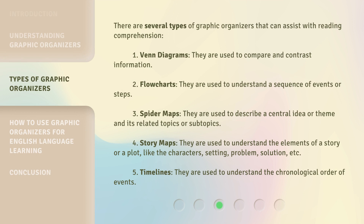There are several types of graphic organizers that can assist with reading comprehension. 1. Venn Diagrams — used to compare and contrast information. 2. Flow Charts — used to understand a sequence of events or steps. 3. Spider Maps — used to describe a central idea or theme and its related topics or subtopics. 4. Story Maps — used to understand the elements of a story or a plot, like the characters, setting, problem, solution, etc. 5. Timelines — used to understand the chronological order of events.